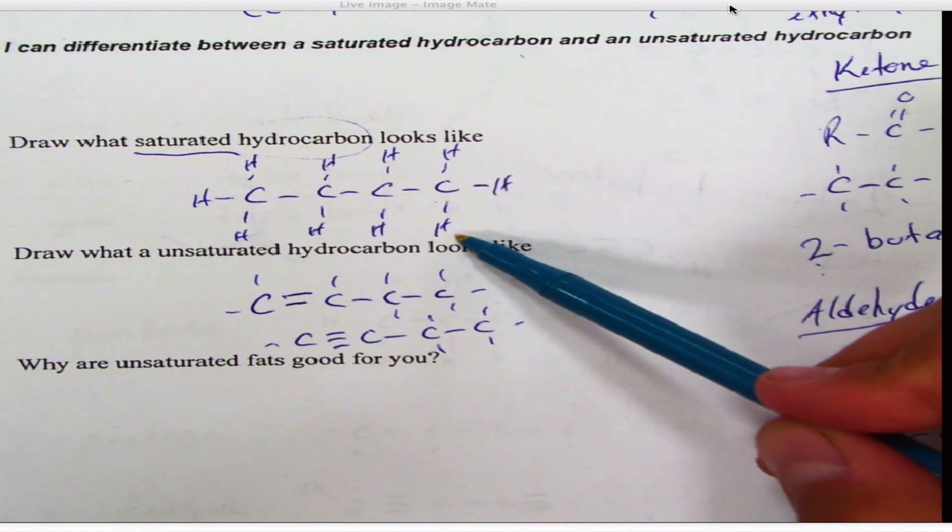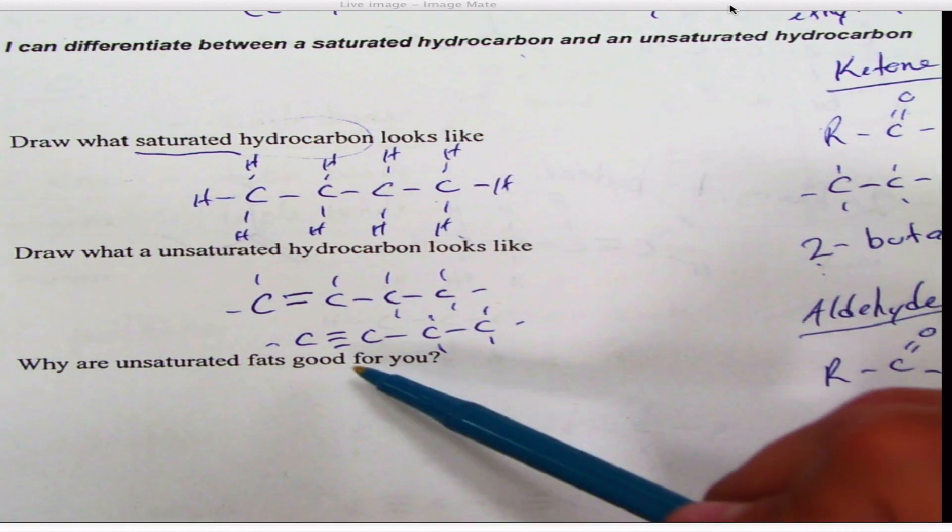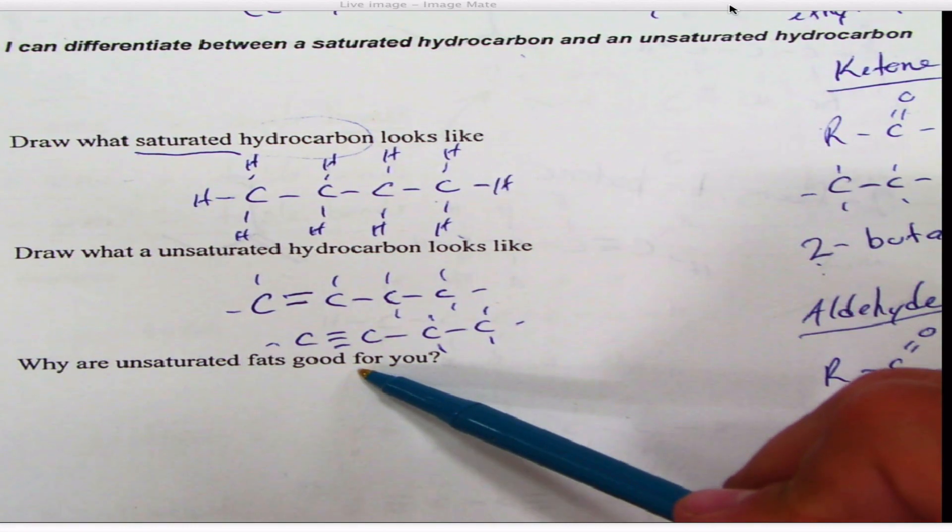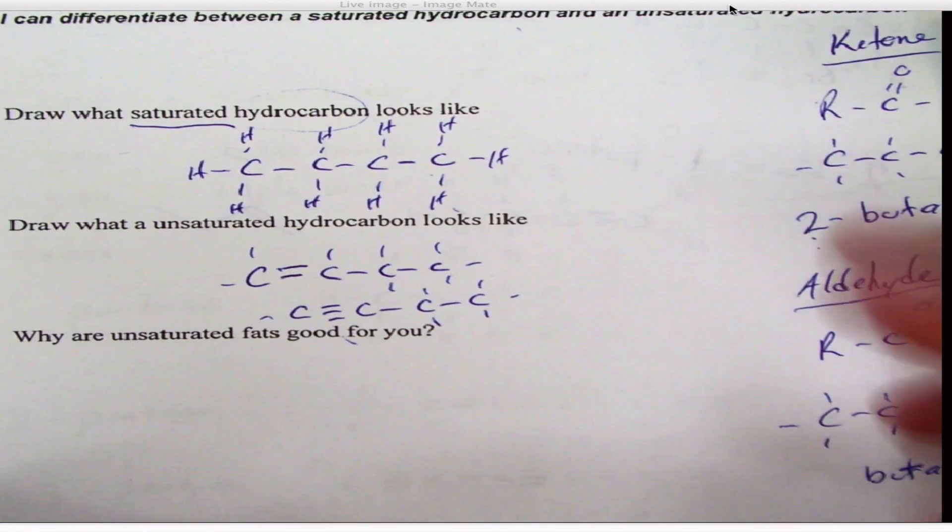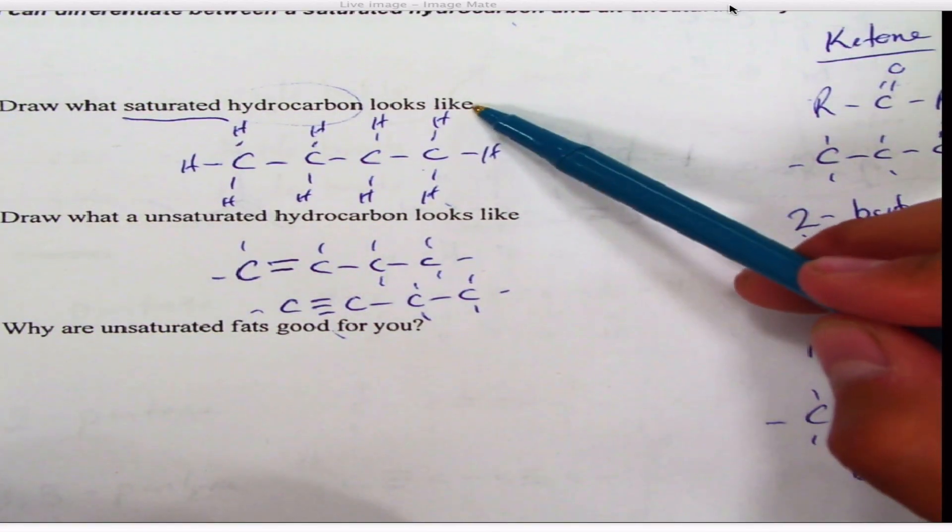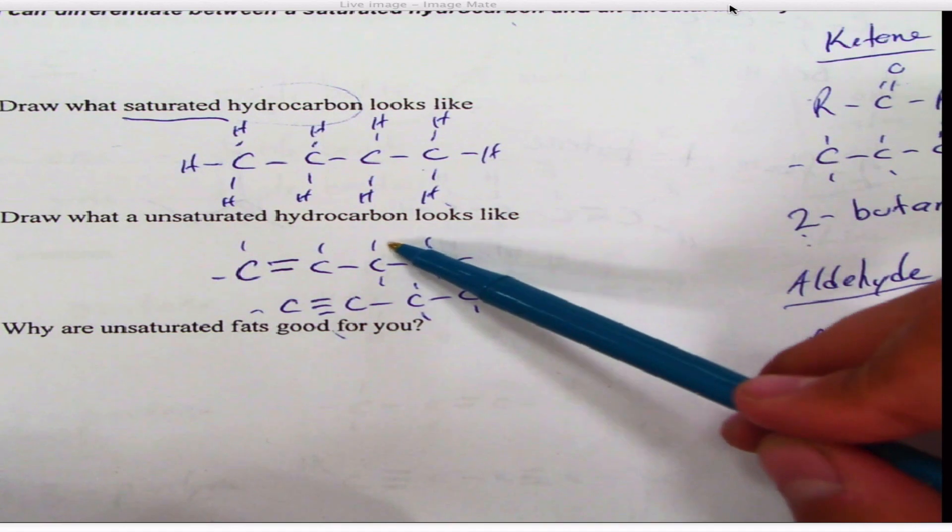Okay, so fats are in all our foods. Fats that are bad for you, so to speak, are going to be your saturated ones because these can really glob up and clog up your arteries. Unsaturated ones don't glob up and clog your arteries as well. They can actually help clean your system and your arteries and your veins out a little bit.